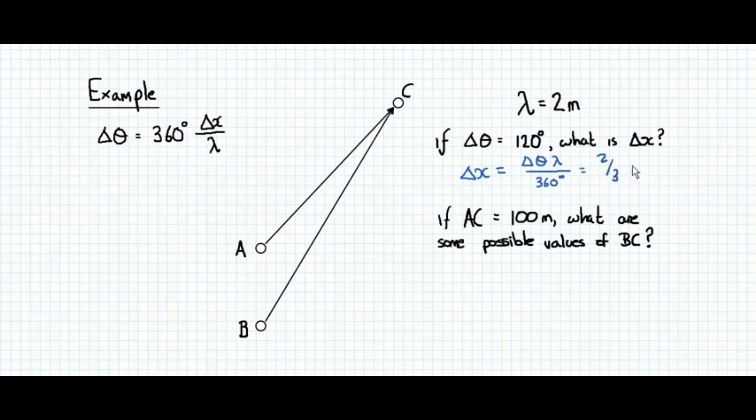Of course, we would never write our answer as two thirds of a meter. We'd always give it as a decimal to the appropriate number of significant figures, whatever that may be. So if AC is 100 meters, what are the possible values of BC? Well, BC is going to be longer. But how much longer? We are given AC as 100 meters. So one possibility is 100.67 meters. That is one path difference longer. Another possibility is 102.67 meters. Because that is one complete wavelength further, plus this path difference. It will have the same effect of producing a phase difference of 120 degrees. And we could continue to add an integer number of wavelengths onto this list.